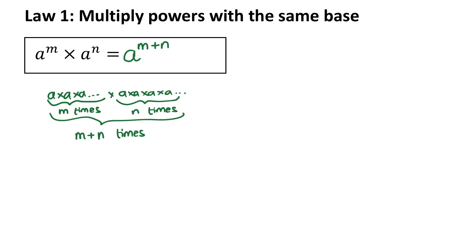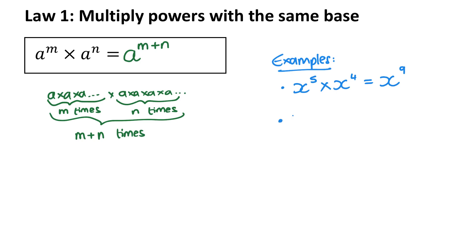Let's look at some examples. If I had x to the power of 5 times x to the power of 4, I could write that as x to the power of 9. Another example: if I have 2 to the power of 3 times 2 to the power of 4, I keep the same base, so it will be 2 to the power of 7. Be careful that if you've got a numerical base, you don't get mixed up and change the base.